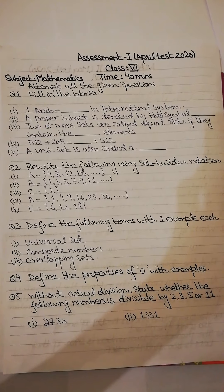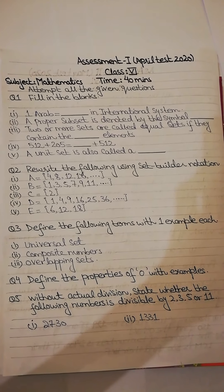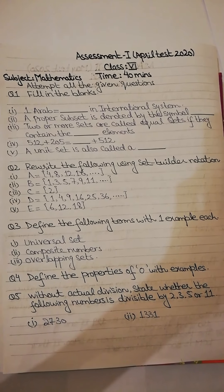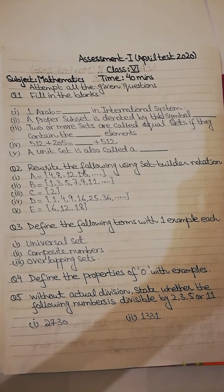Fourth, 512 plus 205 is equal to dash plus 512, and fifth is a unit set is also called a dash. Which word is used, you will write in your blank.